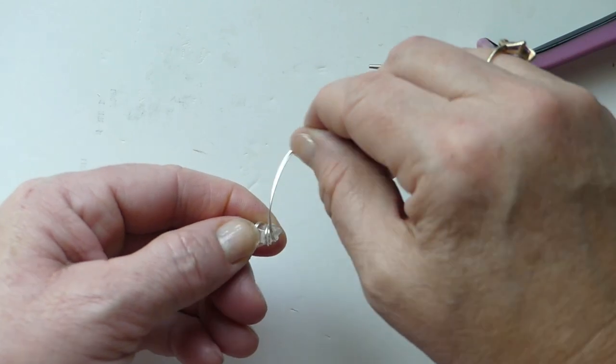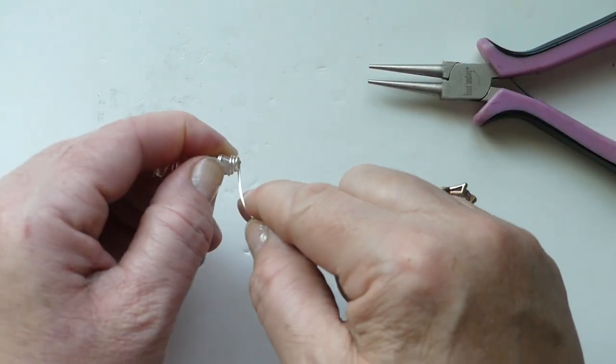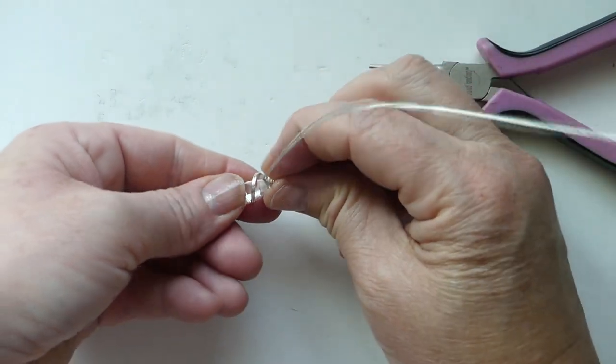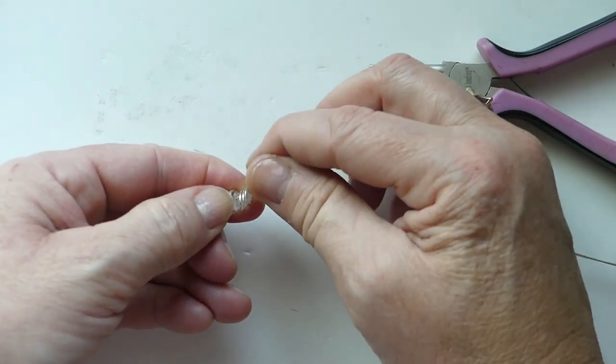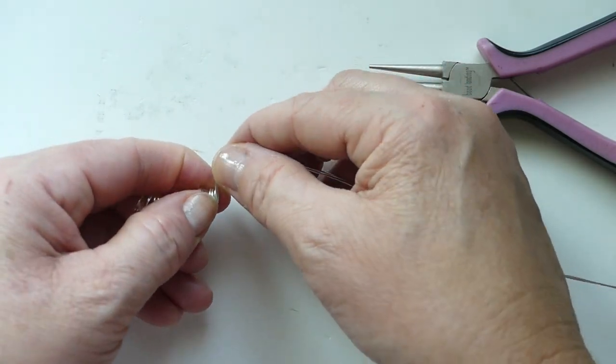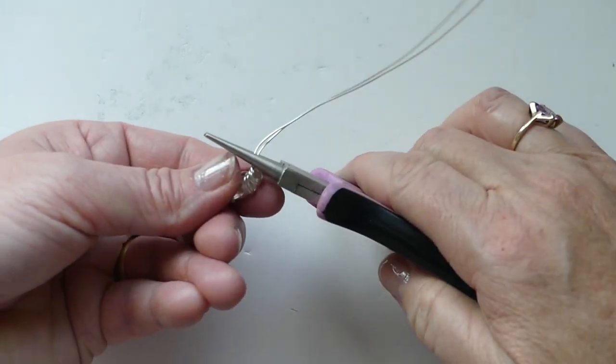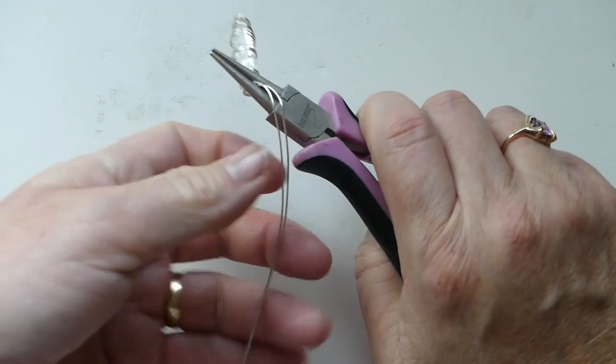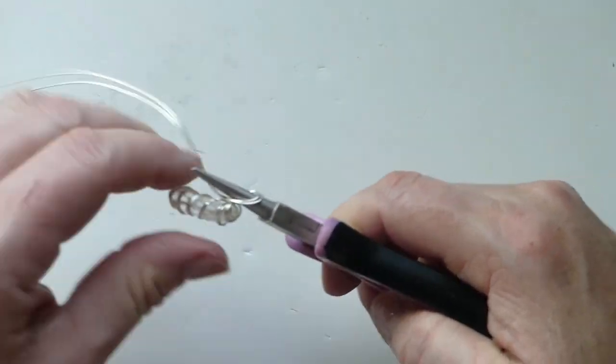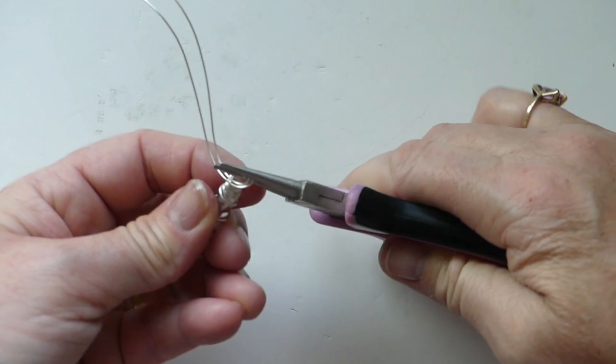And then just bring it up to the top. And now at the top I'm going to do a couple of loops or coils pretty close together. And then taking my round pliers.